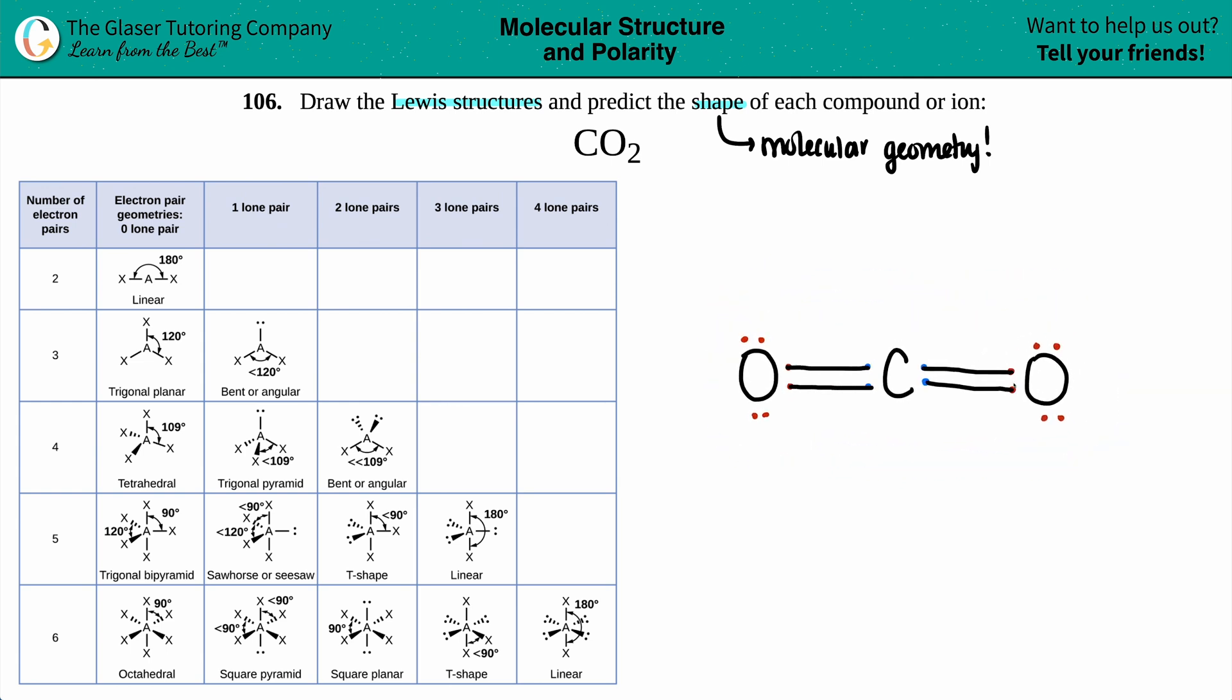Now let's get that molecular geometry. The molecular geometry is always going to come from the central atom, so the shape is always going to come from the central atom, the molecular geometry. In this case that's the carbon. Now in order to use this chart, the first thing is you just have to find out the number of electron pairs around your atom.